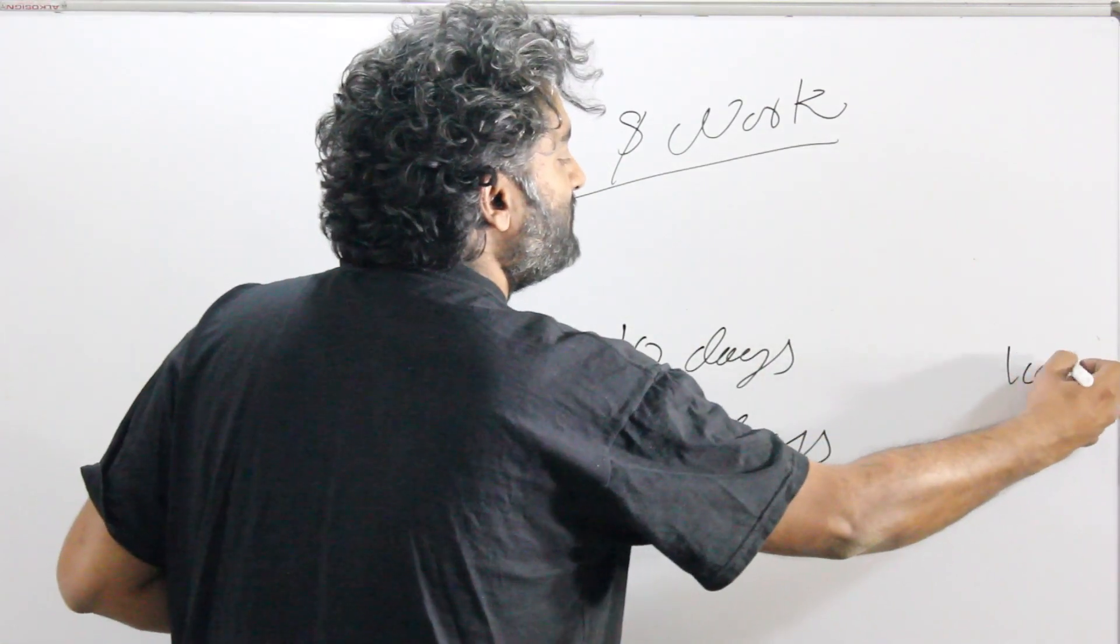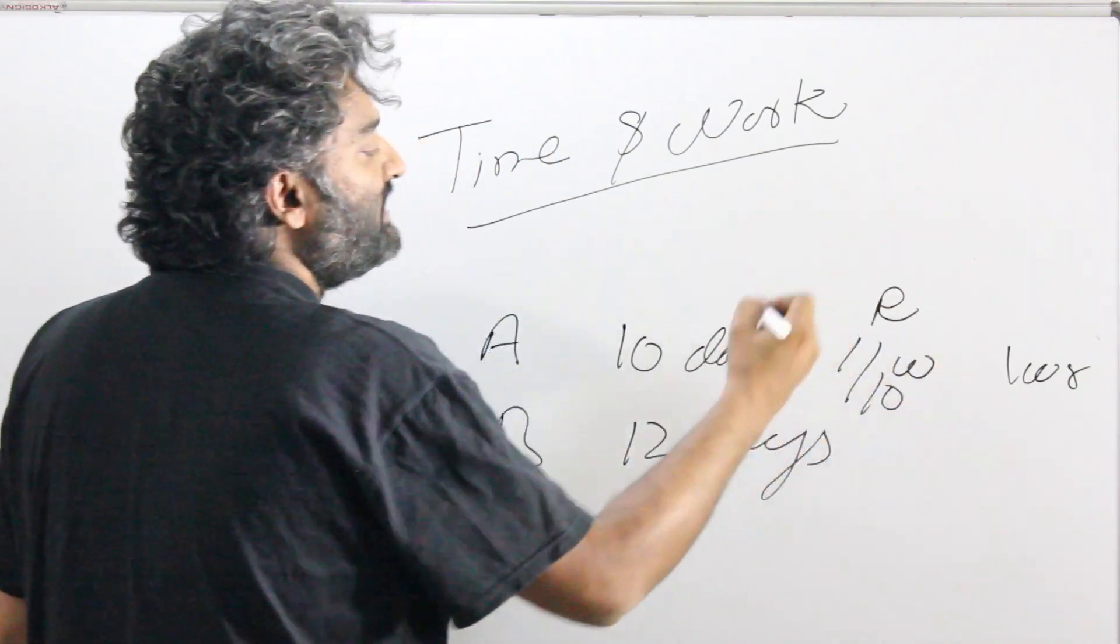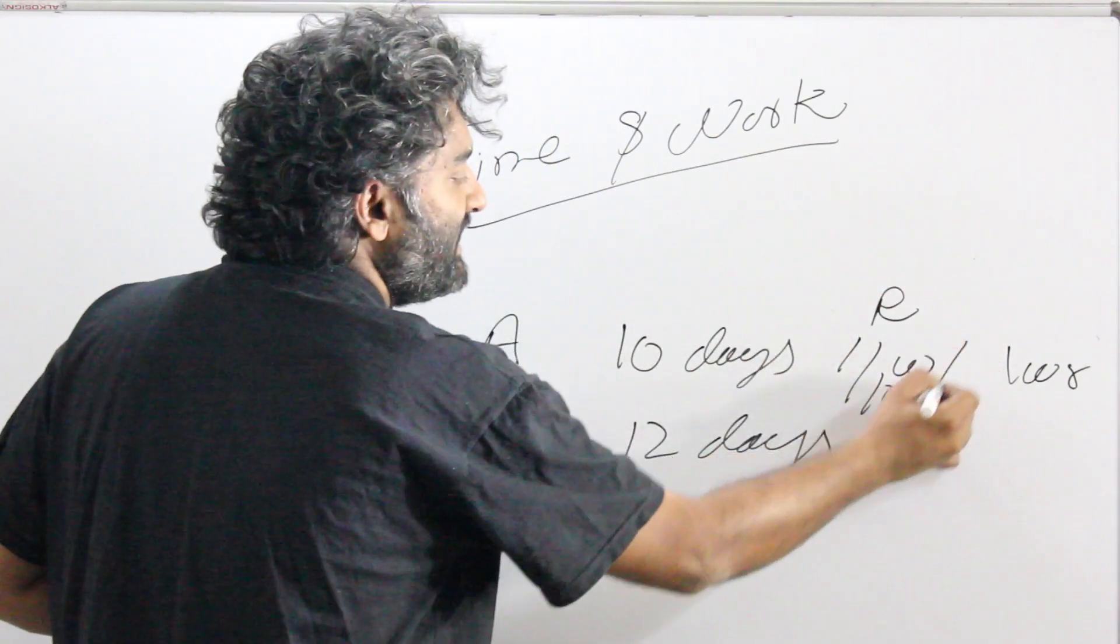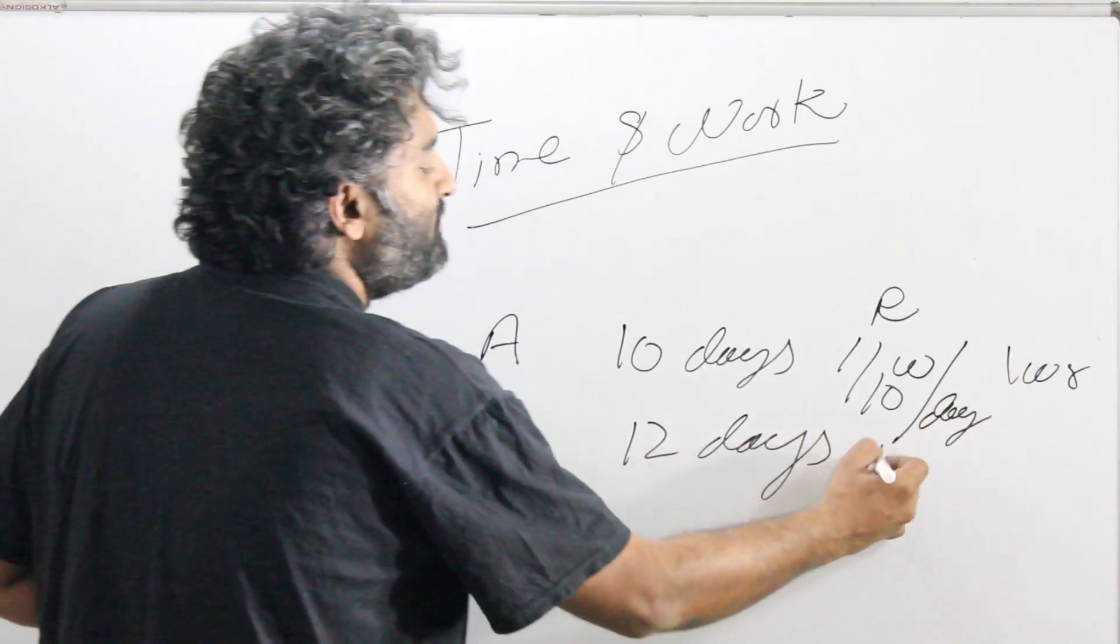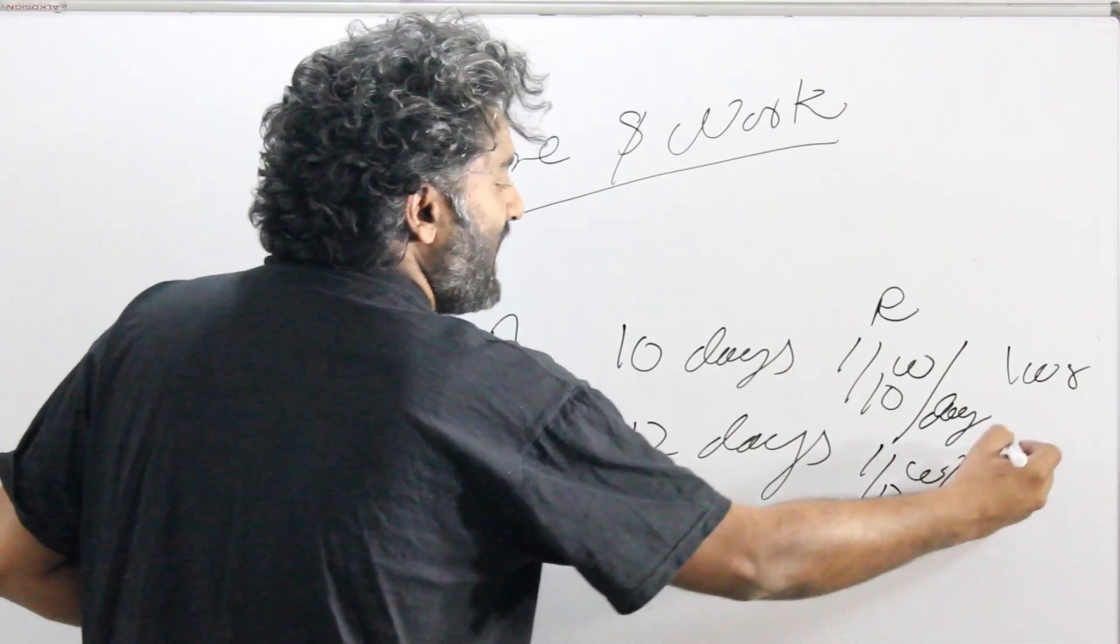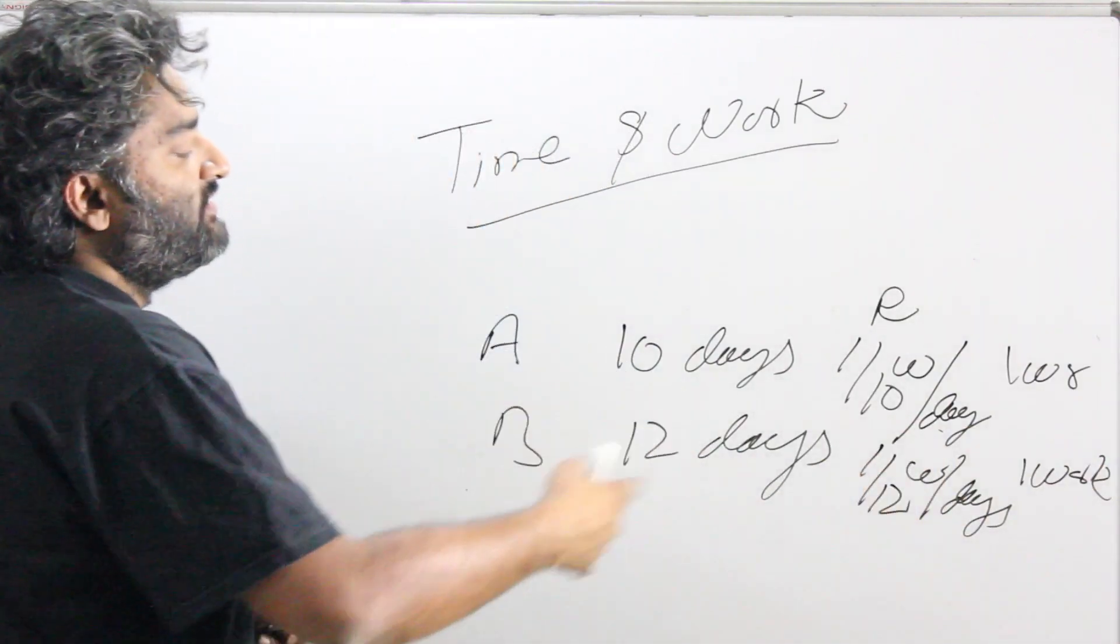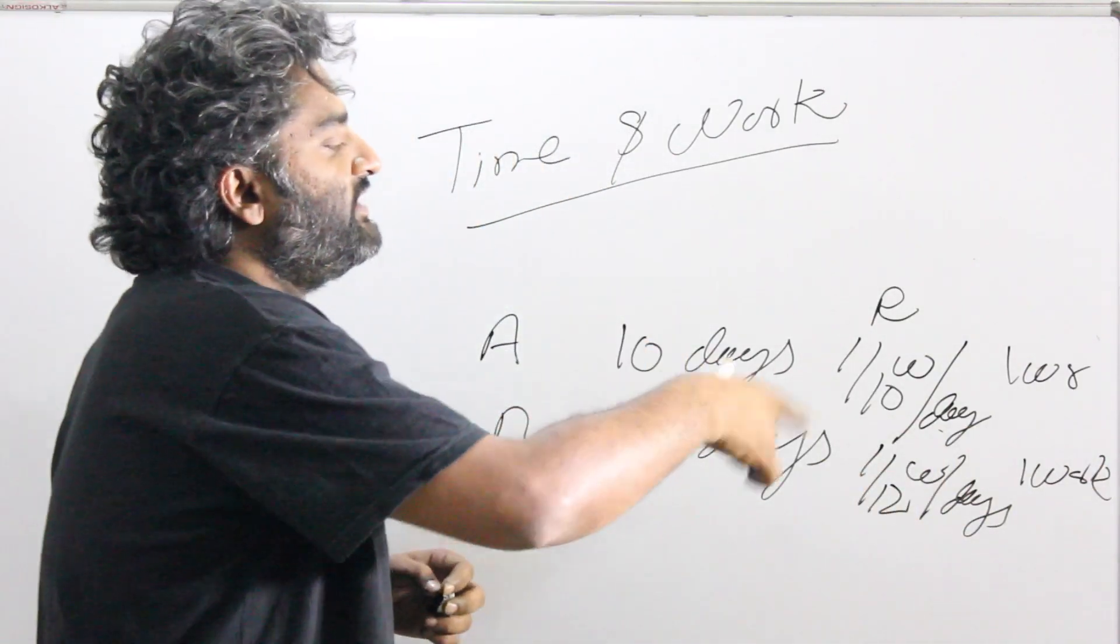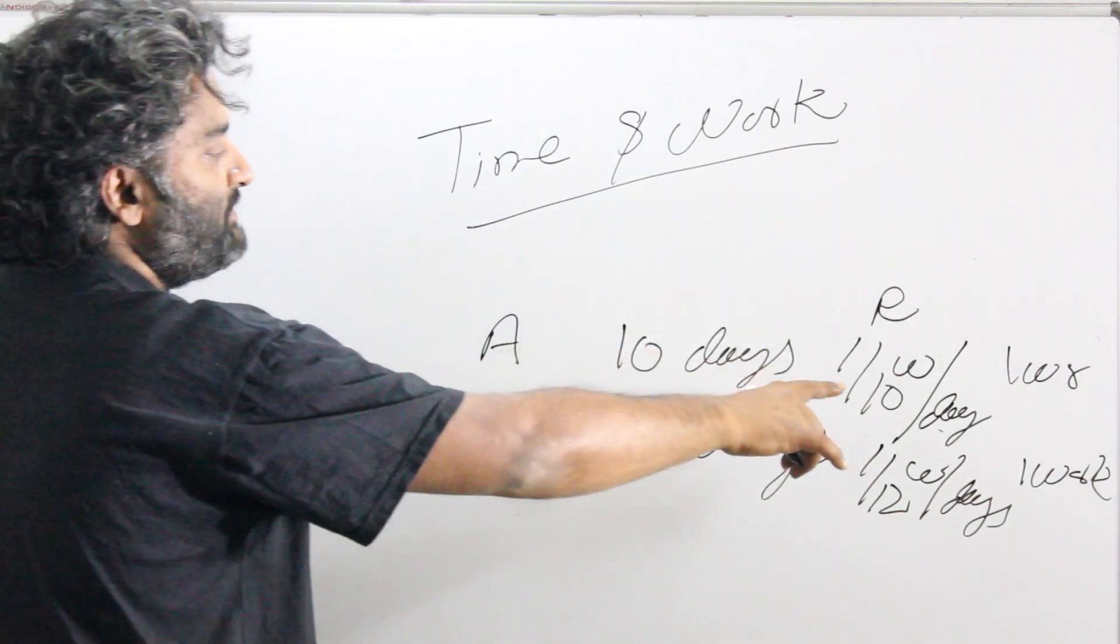I can call it one work again. The rate for A would be 1 by 10 work per day. For B, the rate would be 1 by 12 work per day. I know this would feel uncomfortable because of use of fractions. Later we'll try and think of a method where we can remove the fractions involved.